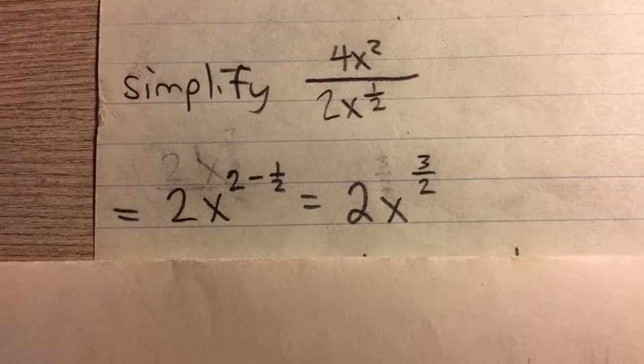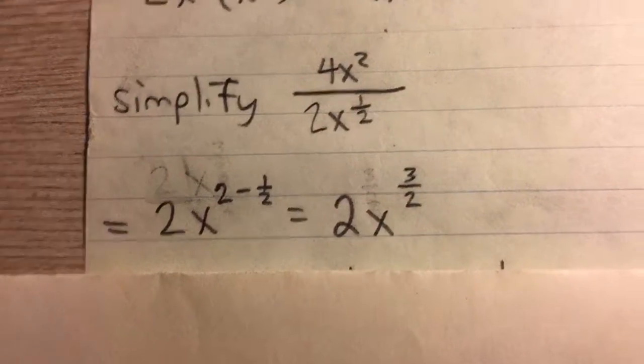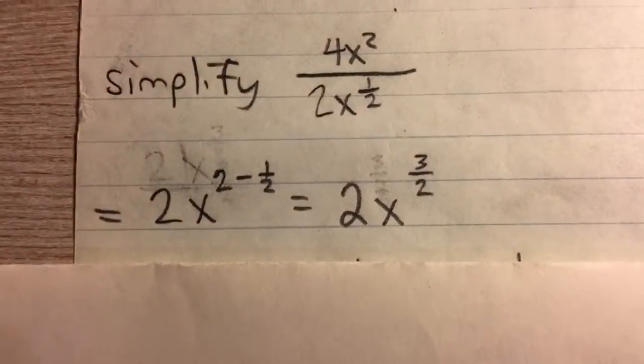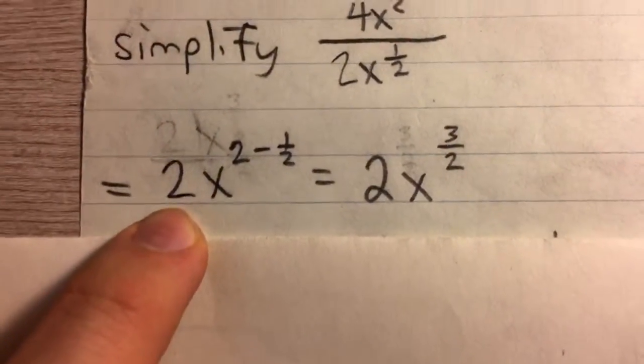Simplify 4x squared over 2x to the 1 half. First off, here I have 4 divided by 2, so I can just simplify that to 2.